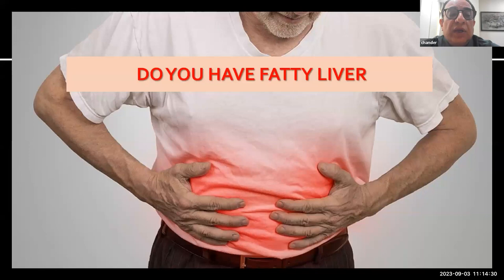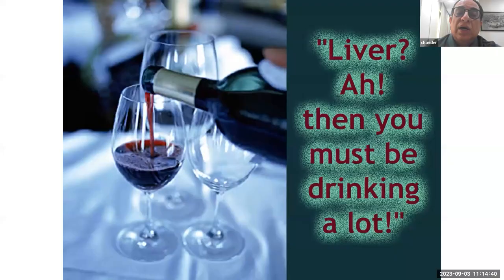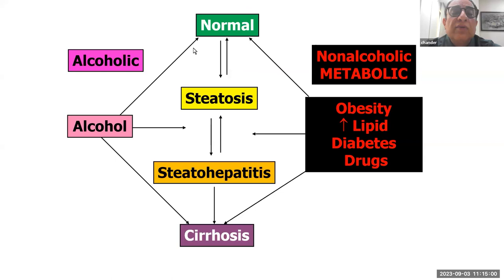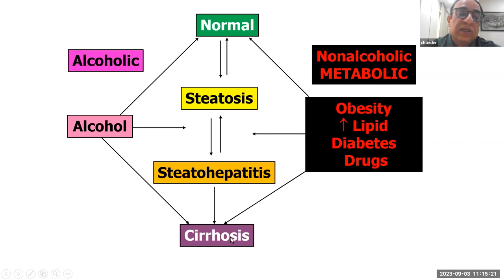Due to abuse by various factors, patients land up with fatty liver and ask us: do I have fatty liver? In the past we always asked how much do you drink, but now we know alcohol is not necessarily the leading cause of steatohepatitis. It is bad diet — what I call the McDonaldization of society. The liver, either due to alcohol or more commonly now metabolic disease — now called metabolic fatty liver disease — can face insult due to obesity, increased lipid, diabetes, and drugs. This leads to steatosis, inflammation, fibrosis, and finally cirrhosis.